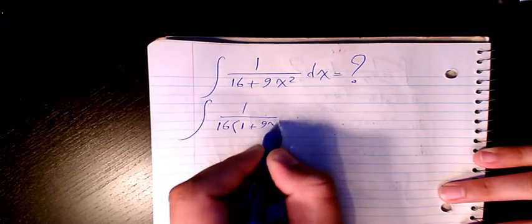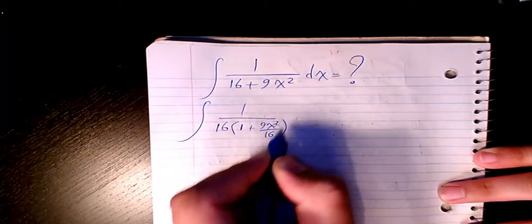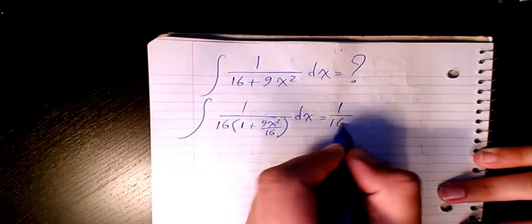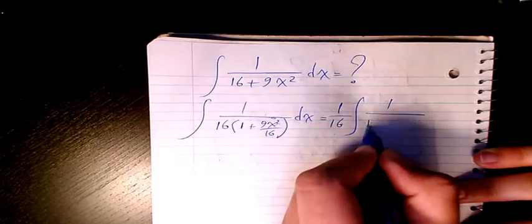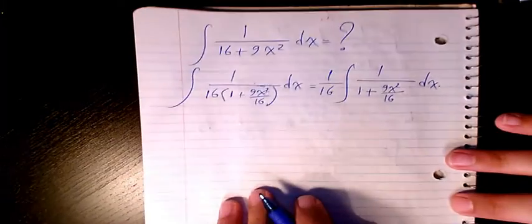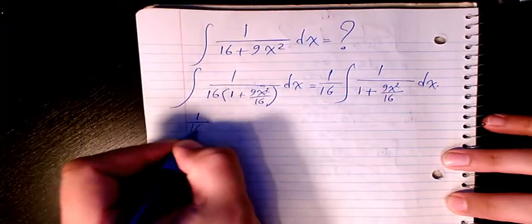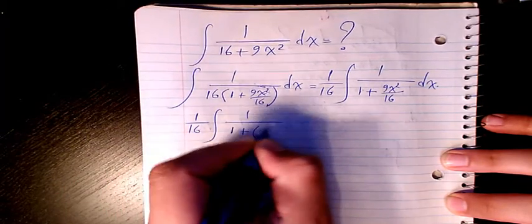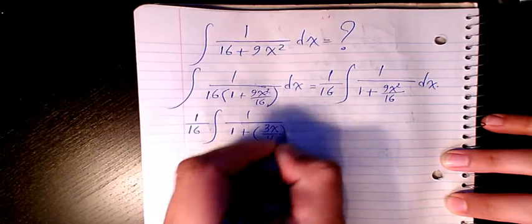1 plus 9x squared divided by 16 dx. So that's gonna go outside, it's gonna be 1 over 16, integral of 1 over 1 plus 9x squared divided by 16 dx. Then I have 1 over 16, 1 over 1 plus 3x over 4 squared dx